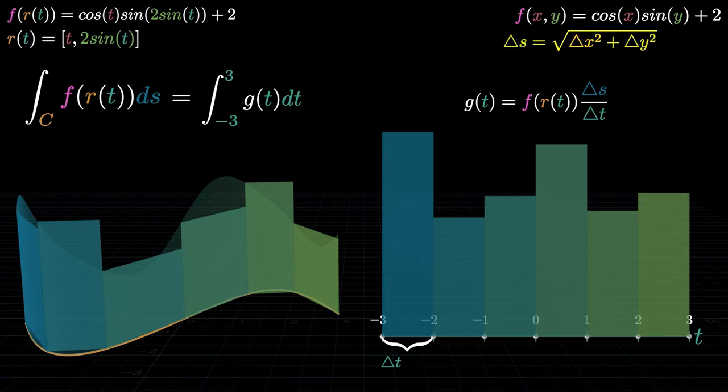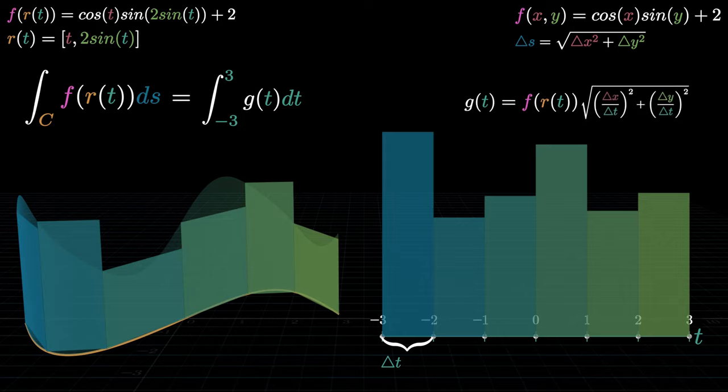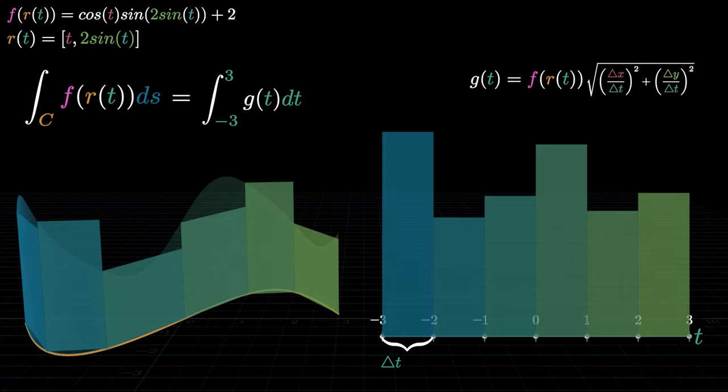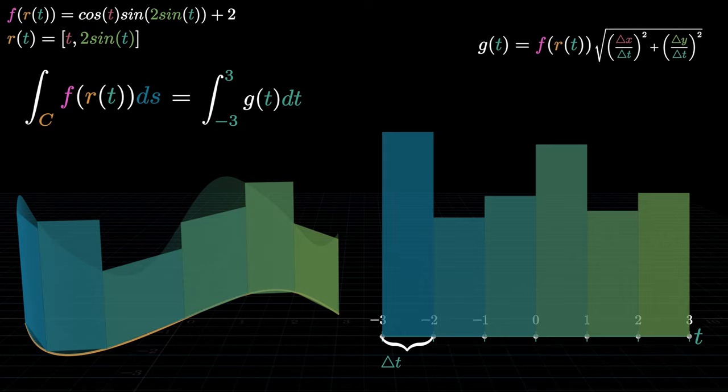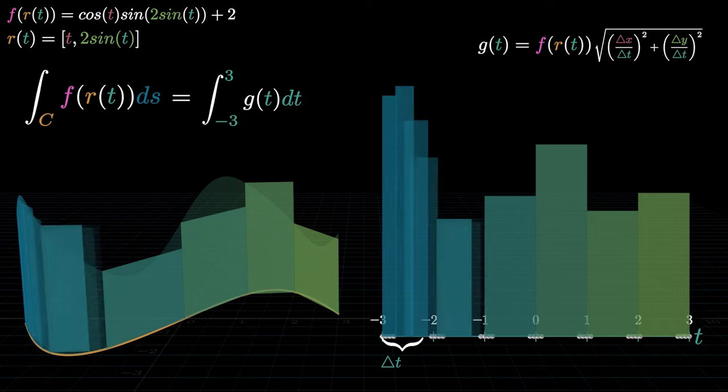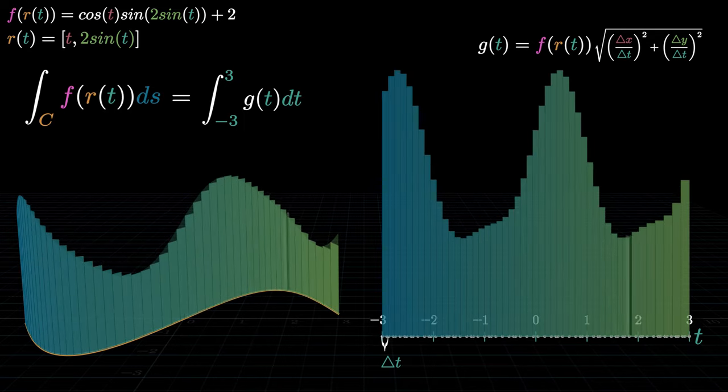Substituting our expression for delta s, we now have a function of t representing the new heights. Now the only thing left is to crank up the number of rectangles to infinity to make our approximation increasingly better.